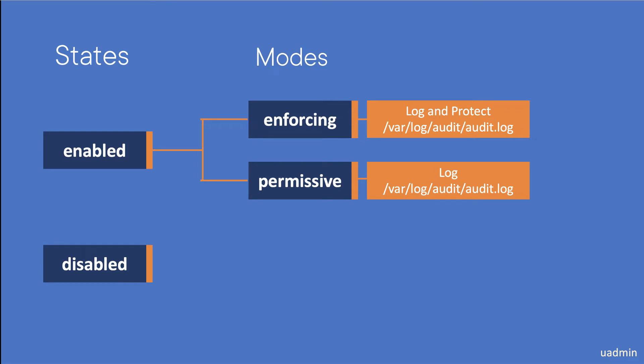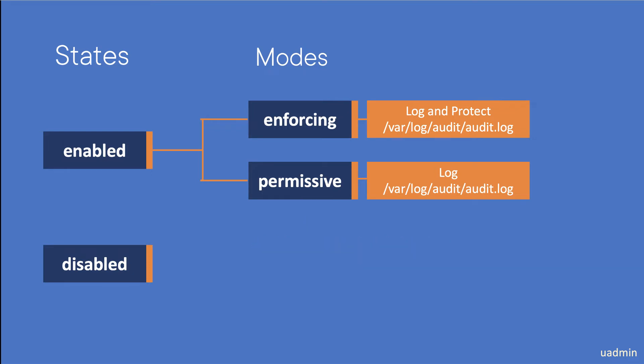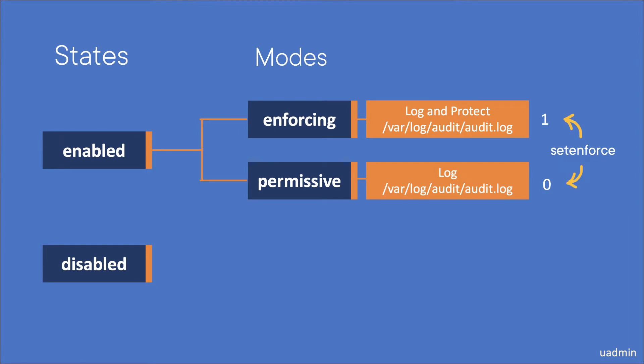Permissive mode can help you troubleshoot issues without having to switch to the disabled state, or you can use it to make sure there won't be any problems when you activate a newly configured machine. Keep in mind that your system is vulnerable when it's in permissive mode. SELinux should be enabled at all times, but you can switch between enforcing and permissive on the fly using the setenforce command.